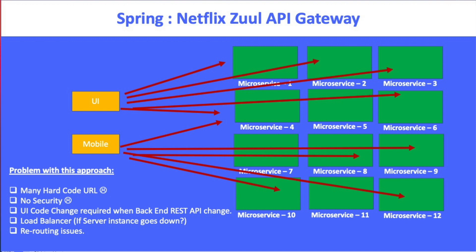So what are the problems here? First, many hardcoded URLs in your UI or mobile code. No security means all microservices are open and the security threat is very high. You cannot use authentication and authorization in a clean way because everything is open. And if you change anything in the backend - suppose any change in the REST mapping API - you have to update the UI code accordingly. Very tight coupling.